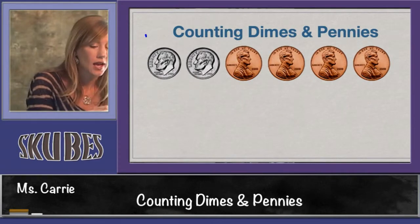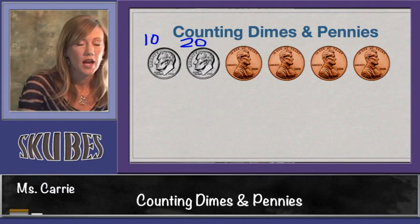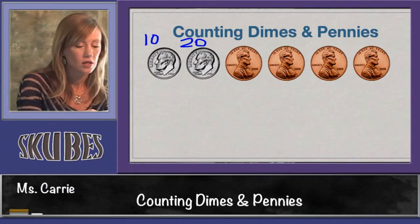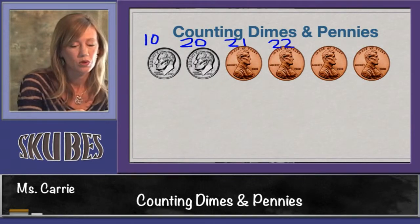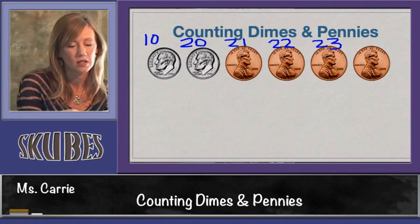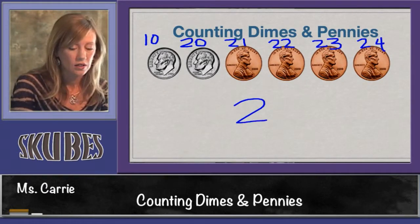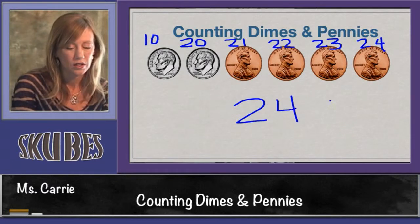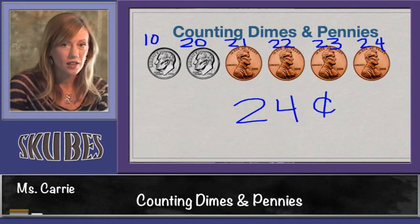Now we have two dimes and four pennies. We'll start off by counting by tens: ten, twenty. Now we're going to switch over to ones: twenty-one, twenty-two, twenty-three, twenty-four. This group of coins equals twenty-four cents.